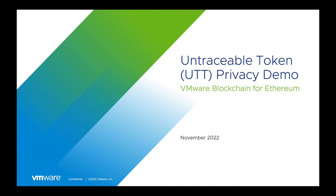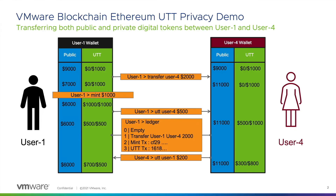Hello, this is a quick demo of the untraceable token UTT feature now available in VMware Blockchain Ethereum. UTT allows for anonymous transfers of digital currency on a blockchain network such as Ethereum. Here's a quick walkthrough of the demo.